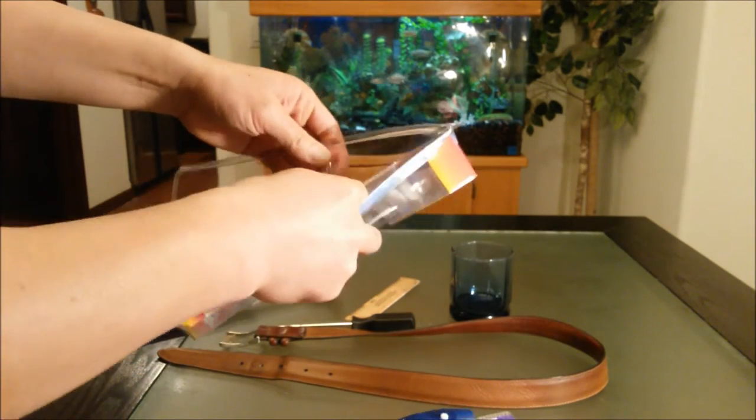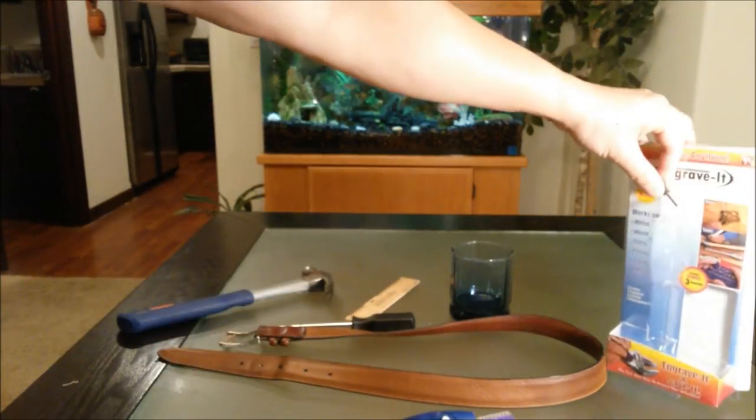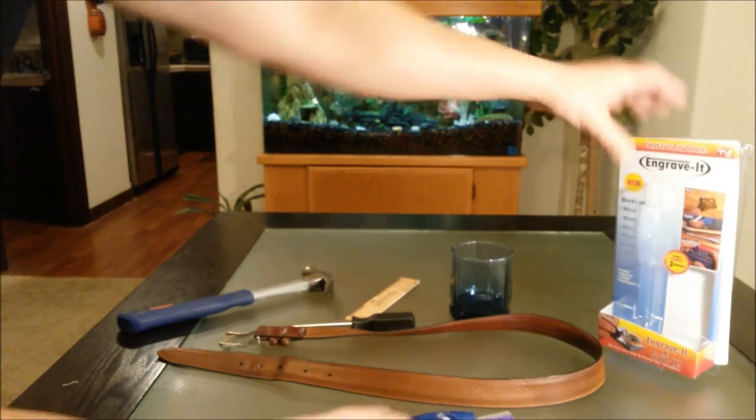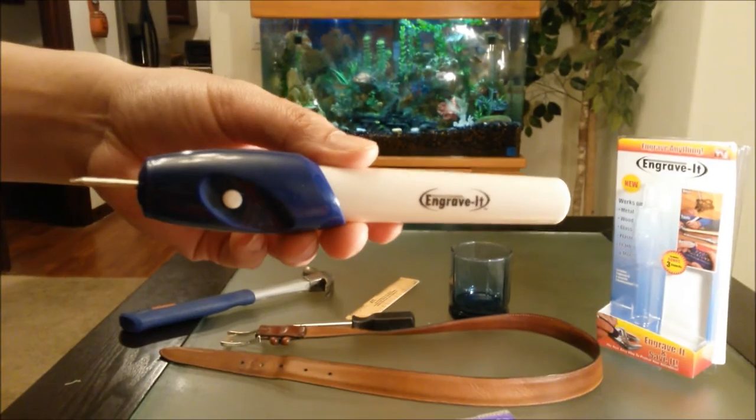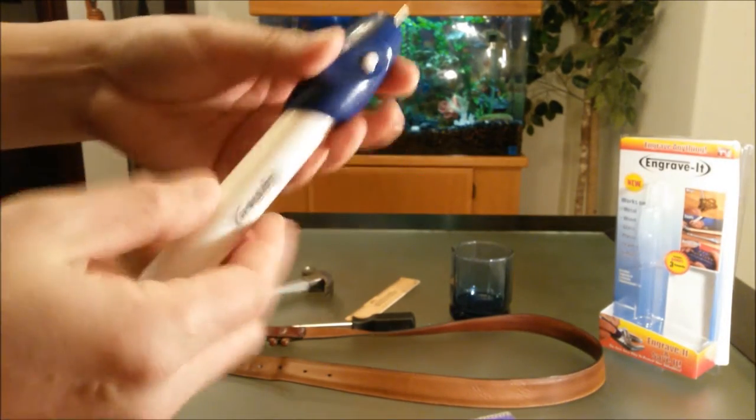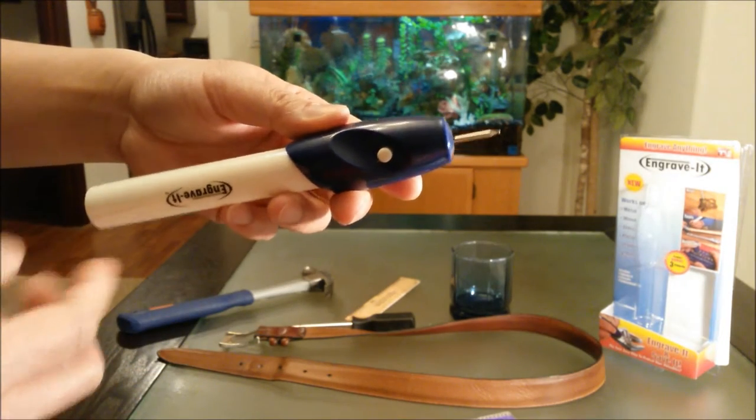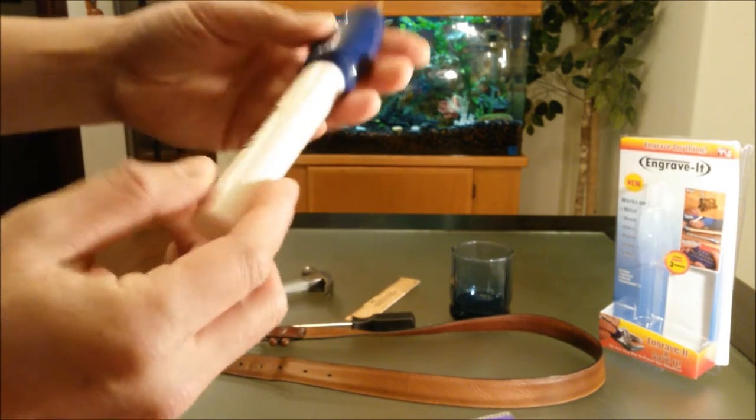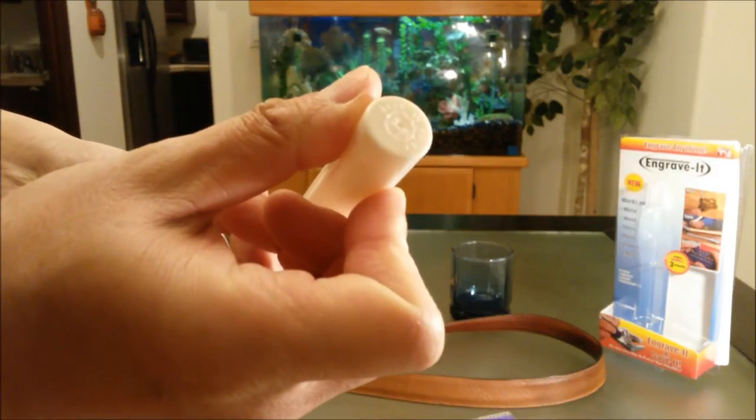Let's get to this extra tip. Put this off to the side. Let's check out the pen itself. It has the Engrave-It logo right here. It's pretty lightweight. I would say this is about 6 inches or more, very simplistic. Let's see where we put the batteries at. It's made in China.